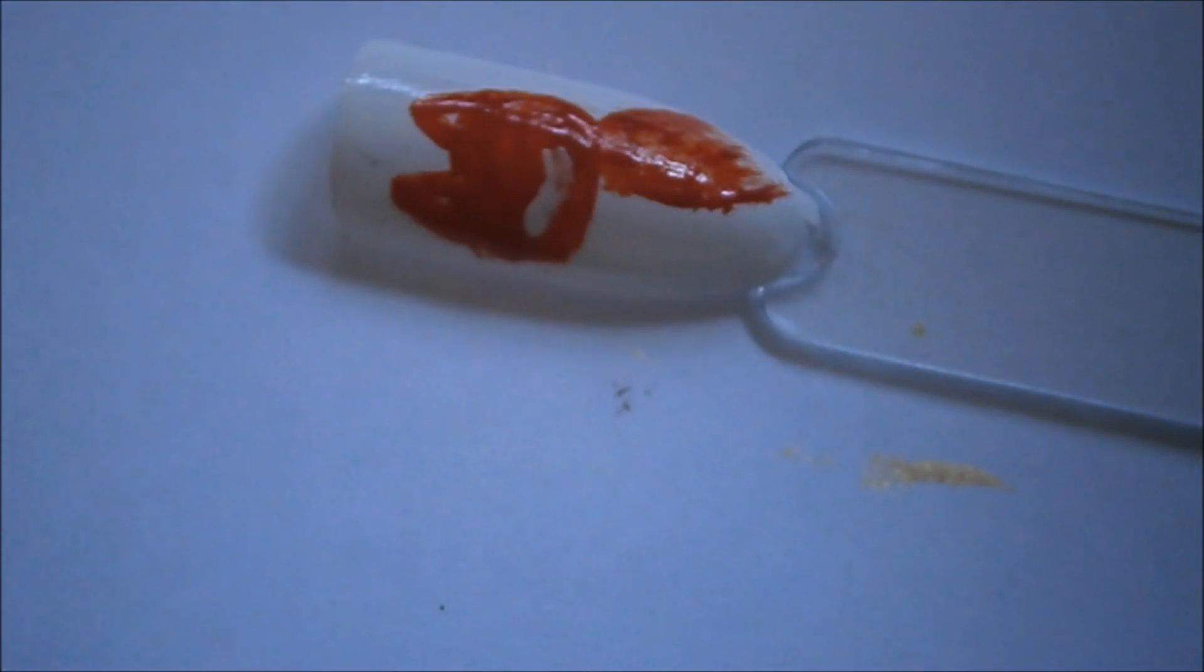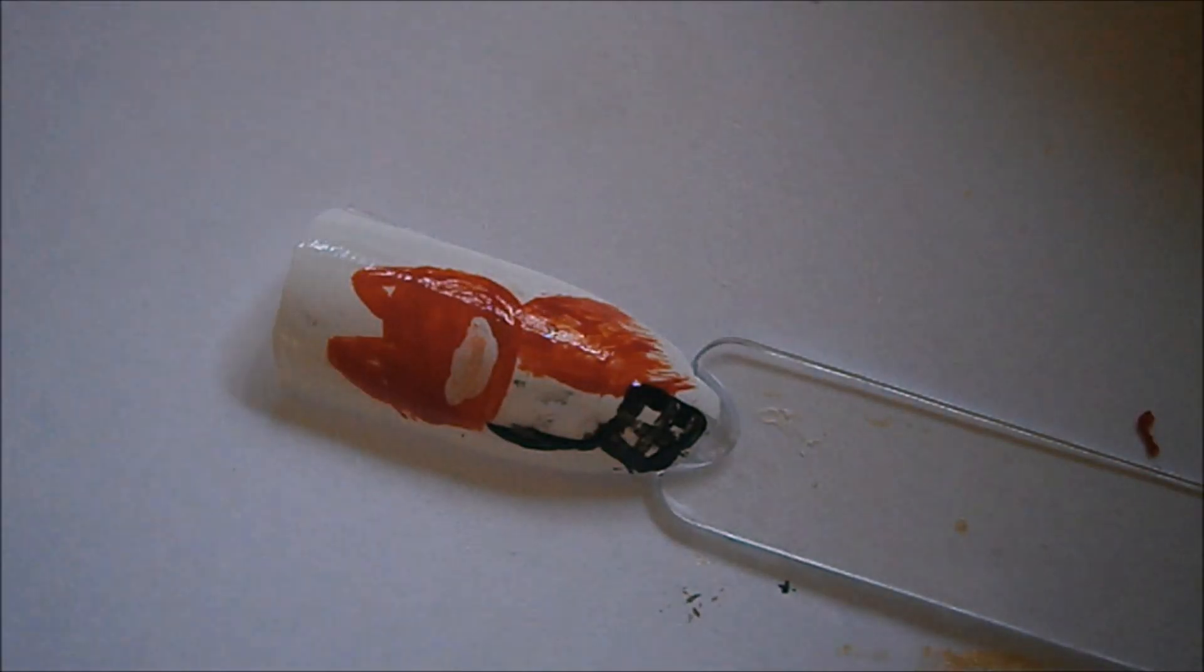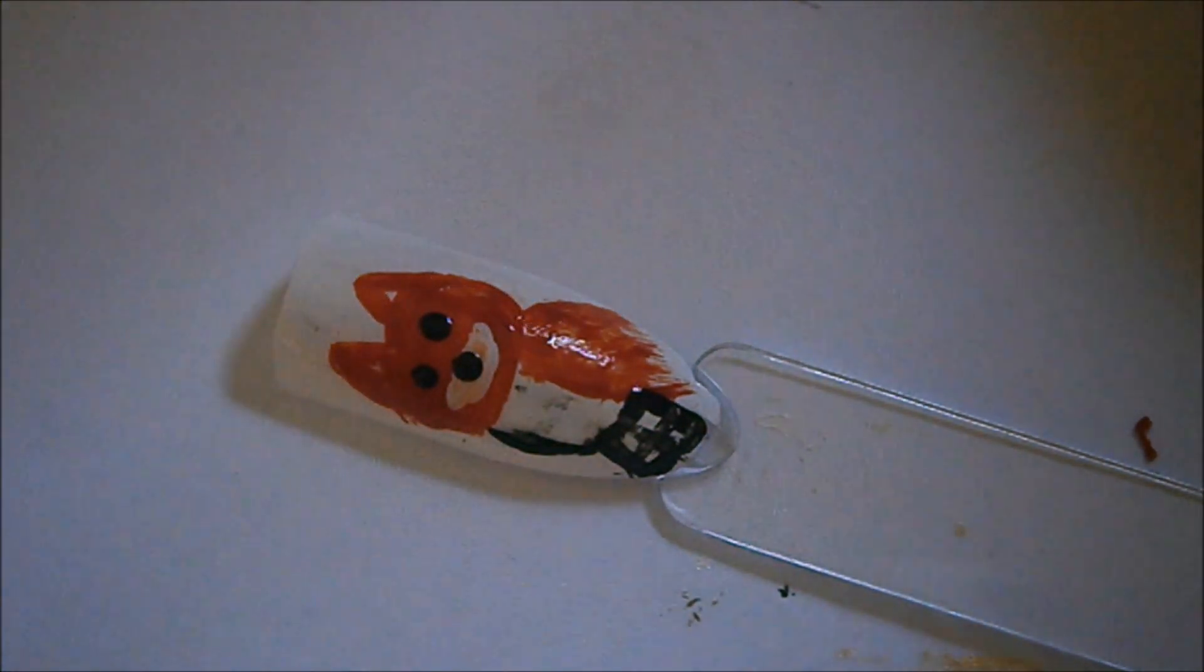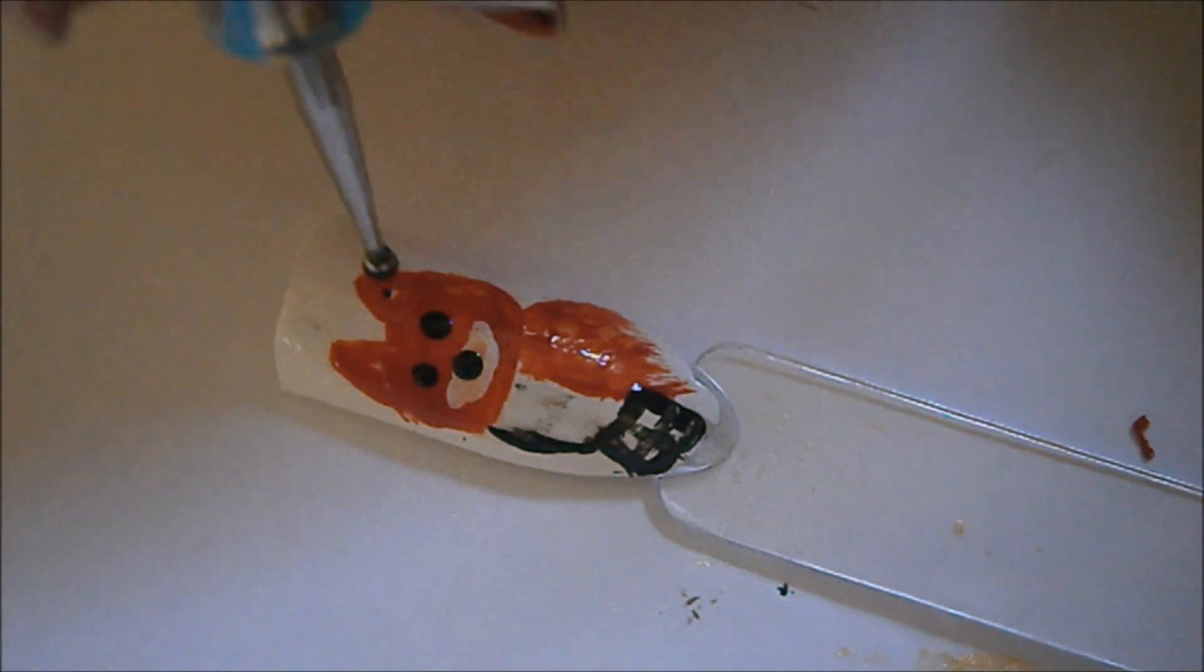Először a hátát a narancsárga festékkel, amit ilyen nagyon szabálytalanul dolgozok el alul, hogy olyan legyen, mintha így a bundája, olyan neki a róka. Majd pedig az arcára és a szája köré a fehér részt is megrajzolom. Végül a lábát és a farkasát is megrajzolom a feketével, megpontozom az orrot és a szemeket, és a fülét is kitöltöm feketével.